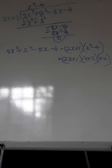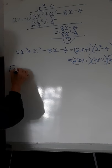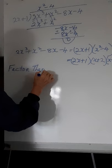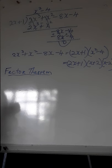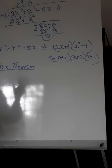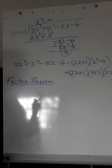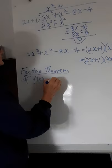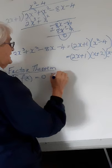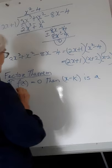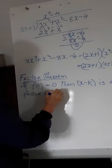So that cubic expression is now factorized into three linear factors. We're now on to what we call the factor theorem. The remainder theorem states that if f of x is divided by x minus k, then the remainder is equal to f of k. If it was divided by x minus 1, it would be f of 1.